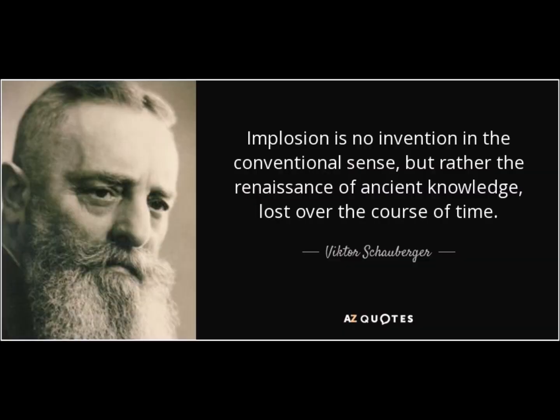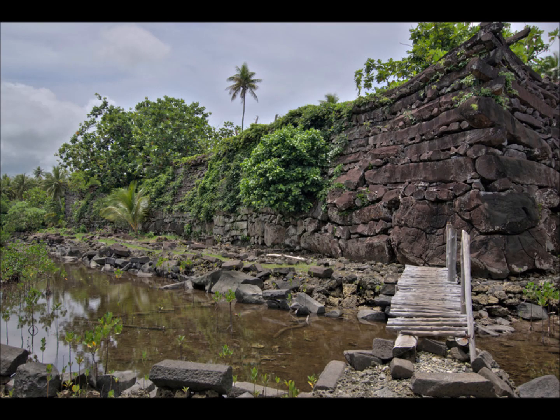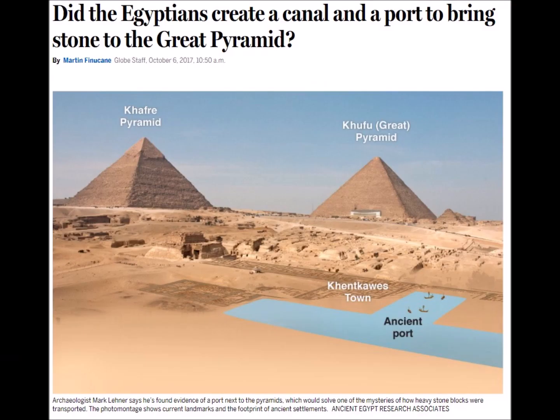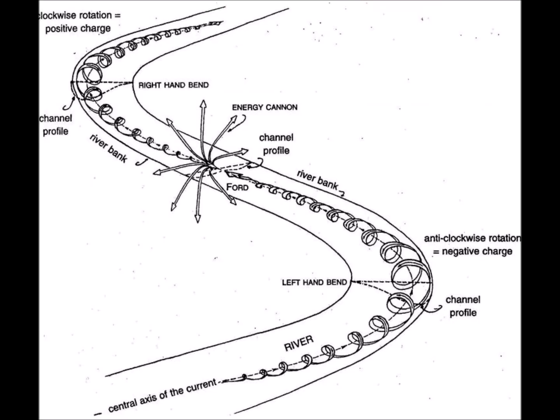Schauberger stated that he was not the first to discover these profound principles, but believed that he had only rediscovered knowledge that ancient peoples had been familiar with from their own observations and studies of the dynamic forces of air and water. And if such is the case, then we might wonder if some of the ancients used these same implosion principles to literally float heavy stones used in the construction of their monuments. Did ancient coastal societies create huge winding canals or flumes, coaxing the water into centripetal motion with flow veins similar to those in Schauberger's log flumes?